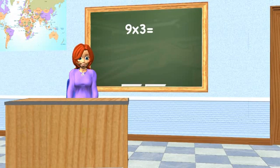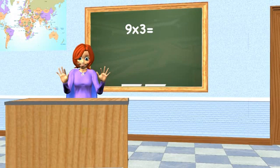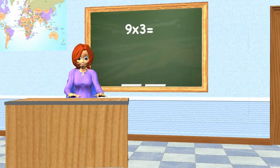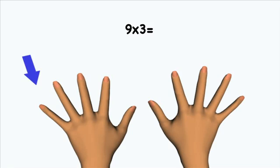Let's start with nine times three. Hold your hands out like this. Sometimes it's easier to put them on your desk like this. Start on your pinky of your left hand and count up three like this: one, two, three. Now fold that finger down.